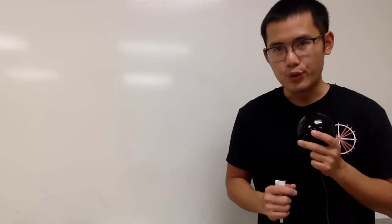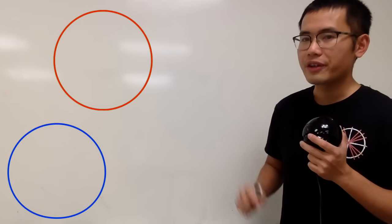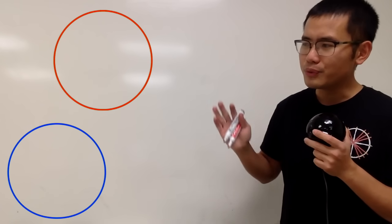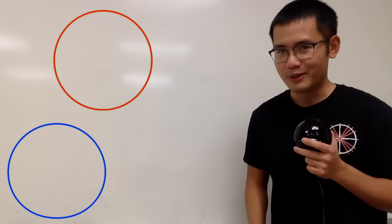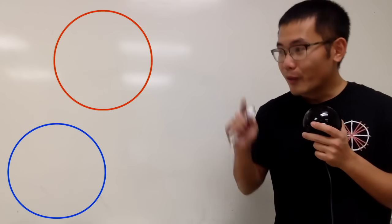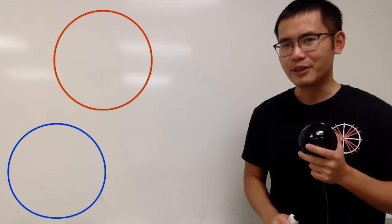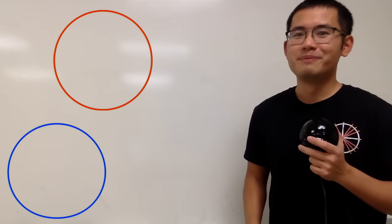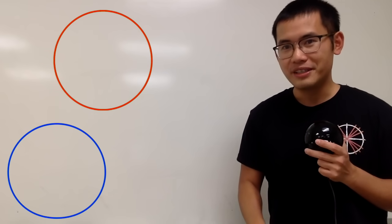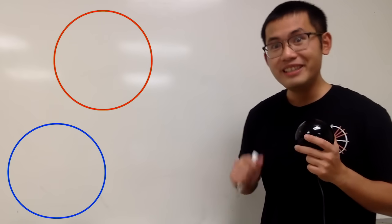Let's do some math for fun. Here's the question for you guys: as you can see on the screen right here, we have two circle-looking circles, and my question is, which one is actually a circle — the red one or the blue one? What do you guys think? Or maybe both, or maybe neither?